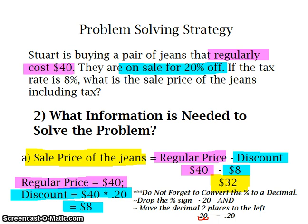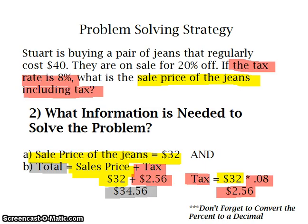So $40 minus $8 is equal to $32. The sales price of the jeans is $32. Now I need to find the total price of the jeans. We are not finished yet because what we are looking for is the total price including tax. We haven't found the tax yet, so we need to keep on moving until we solve this problem completely. In order to find the tax, I must take the sales price, which is $32, and add it to the tax.